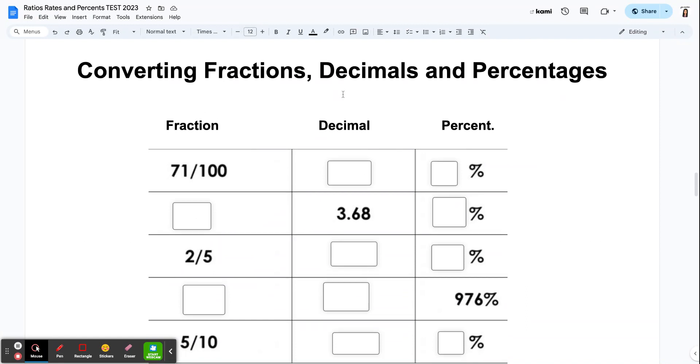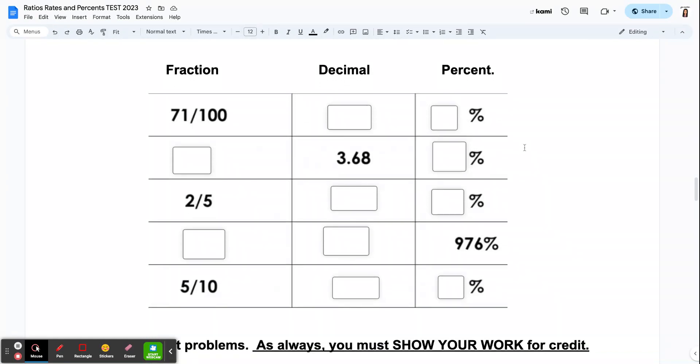This whole next page goes on to the next section of our unit, which was just converting fractions, decimals, and percents. So this first part of the table is literally just giving you one or two portions and you're trying to fill in the rest. So if I say 71 hundredths, what would that look like as a decimal and as a percent?